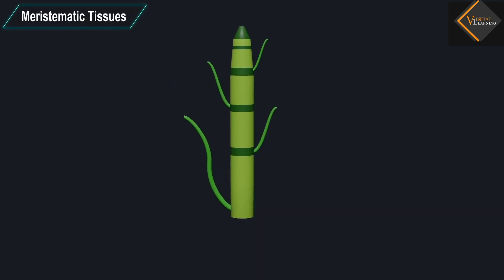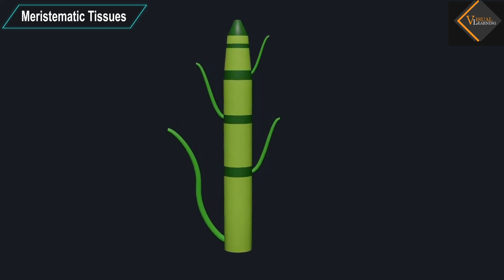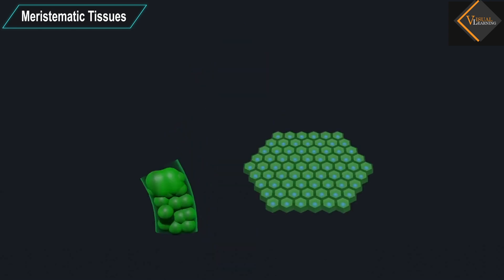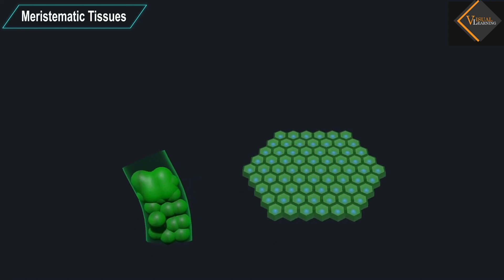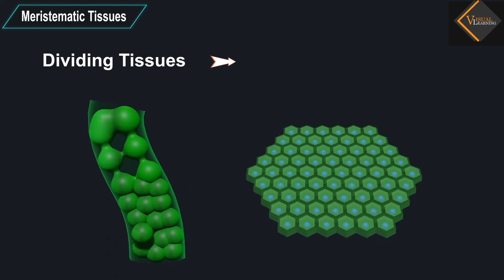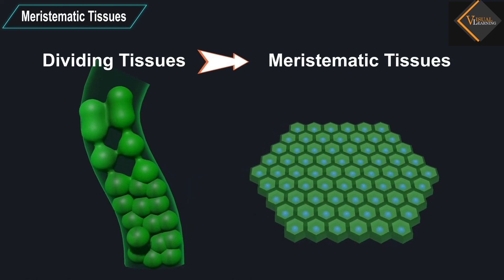Meristematic tissues: The growth of plants occurs only in certain specific regions. This is because of dividing tissue, which is also known as meristematic tissue.